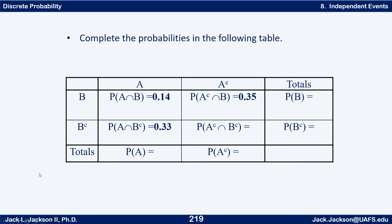Here's another one. Let's fill out the probabilities in this table. Notice I was not given that A and B are independent events, so we can't use that fact yet. They may or may not be independent — we'll find out in a little bit. So just using what you would normally do from a table like this, finish filling out the probabilities. Press pause and come back when you're ready.